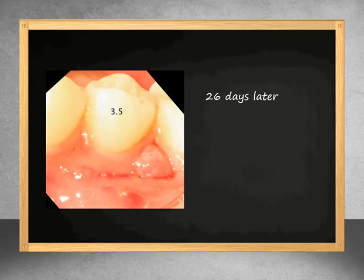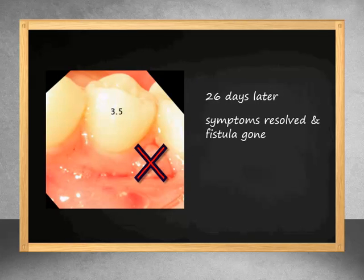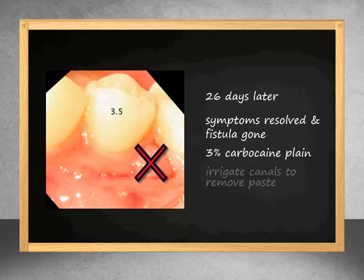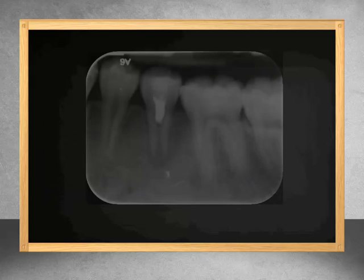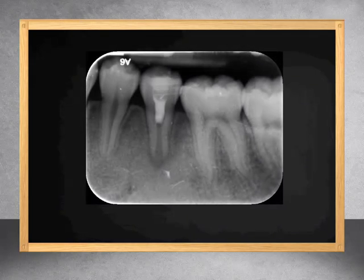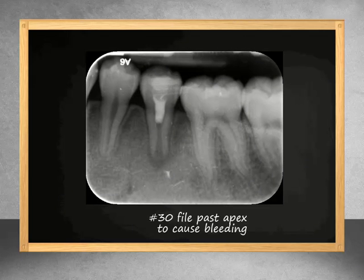26 days later, all the symptoms had dissipated and the fistula tract had closed. The tooth was then anesthetized without epinephrine and the canals were flushed to remove the bi-antibiotic paste. Bleeding was induced using a number 30 file to begin revascularization.